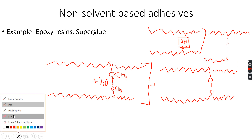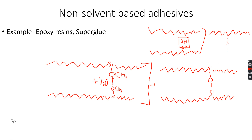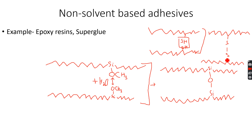This was called the disulfide cross-link. The sulfur is not a part of the polymer chain backbone — it branches out. So you can see that these two chains are now bonded together, not by any intermolecular force, but by proper strong covalent bonds. This is known as cross-linking.